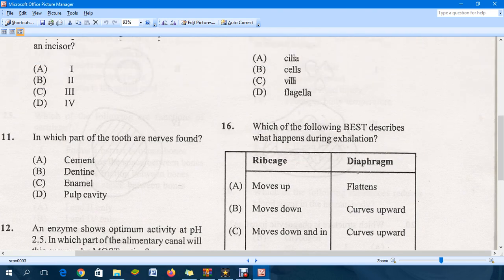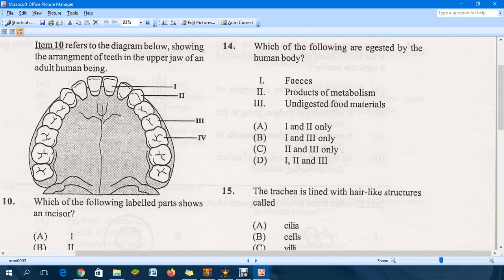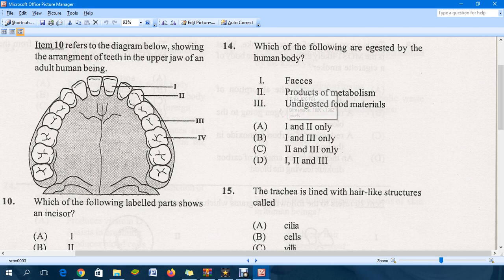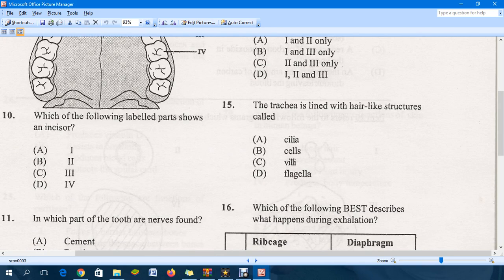Let's move over to question 14. Which of the following are egested by the human body? So egested products. The answer for that seems to be B. We have feces there along with undigested materials. Egested product is totally different from excreted product. The end products of metabolism, those are known as excretory products. Moving down to question 15.